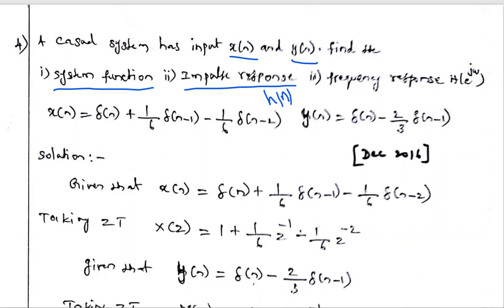Another thing we have to find is the frequency response H(e^jω). The Z-transform of the impulse response is called the system function. Similarly, the DTFT of the impulse response is called the frequency response.